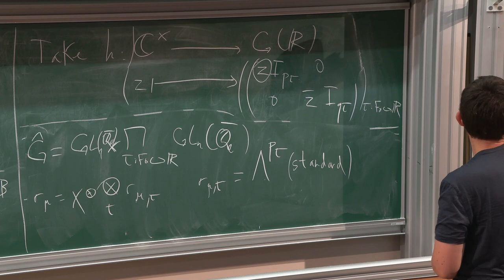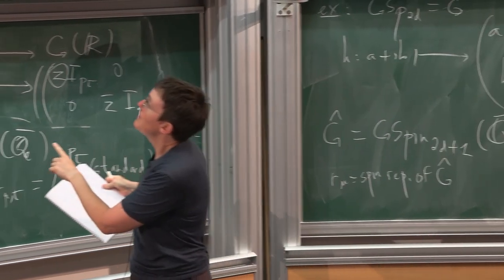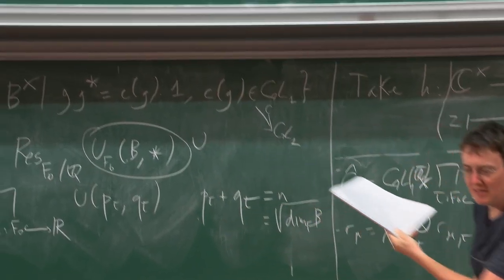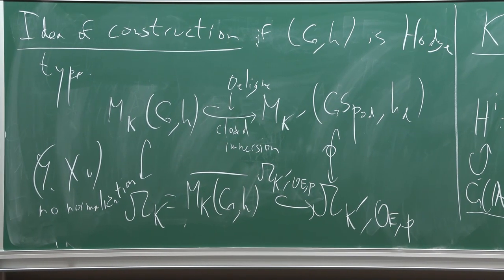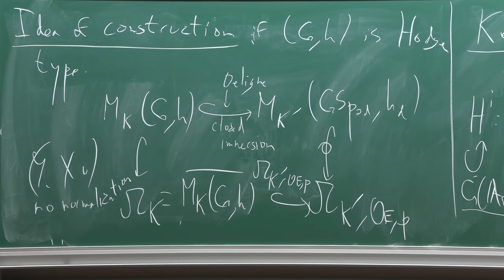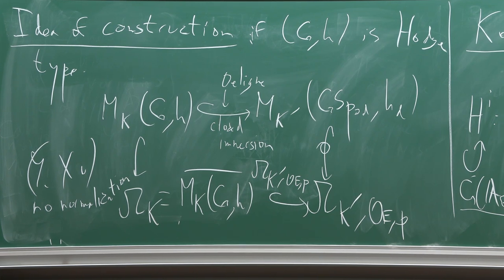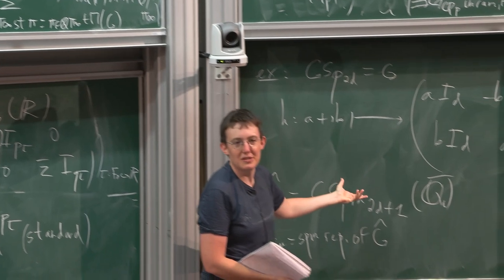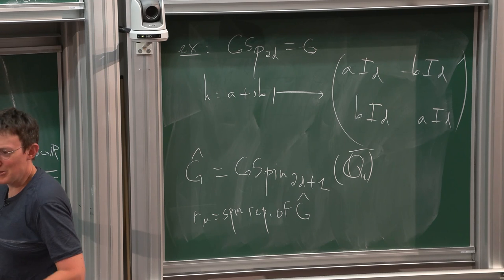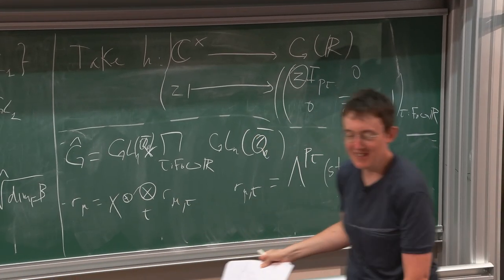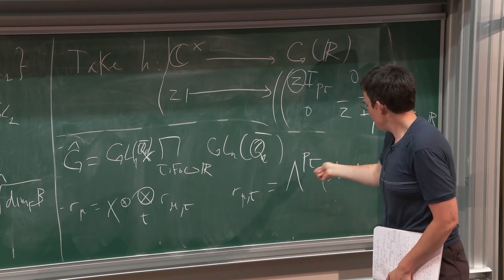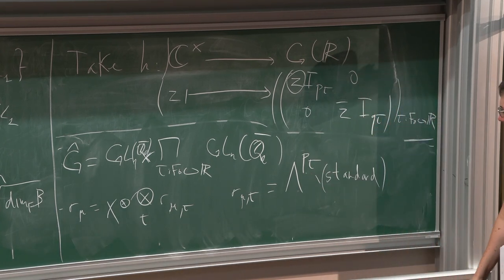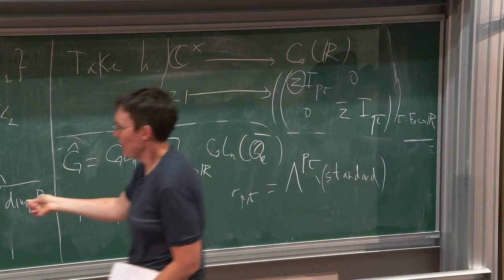Most of these ρ_μ are annoying. Why? Because for GL_2 we really had the global Langlands correspondence appearing in the cohomology cleanly. Here there is this ρ_μ messing things up. What we're really interested in is φ_π, but we don't get φ_π — we get ρ_μ composed with φ_π. In the symplectic case ρ_μ is kind of unavoidable because the dual group doesn't have an obvious embedding into GL_N. But in the unitary case, the dual group is basically a product of GL's — why couldn't ρ_μ just be the standard representation?